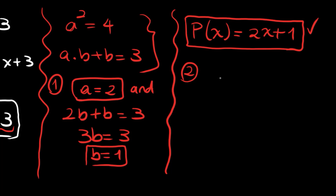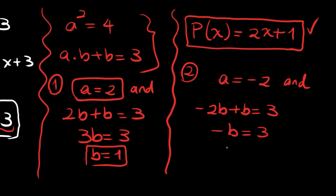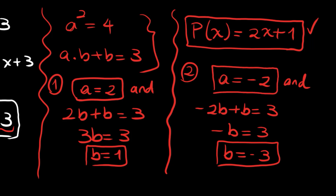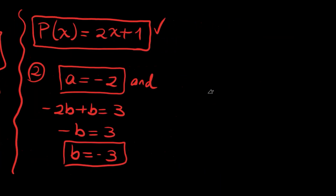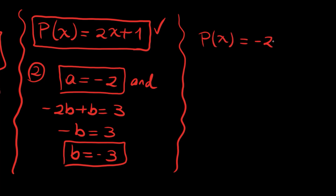Continuing with the second solution: A² = 4 also gives A = -2. Using AB + B = 3 with A = -2, we get -2B + B = 3, so -B = 3, giving B = -3. Therefore the second possibility is P(X) = -2X - 3. And this is the second possibility.